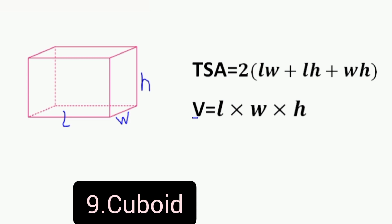Number 9: Cuboid. Cuboid is a three-dimensional shape where each of its faces is a rectangle. It has 6 faces, 12 edges, 8 vertices, and all edges are not the same length. Total surface area is equal to 2 times (length times width plus length times height plus width times height). Volume is equal to length times width times height.